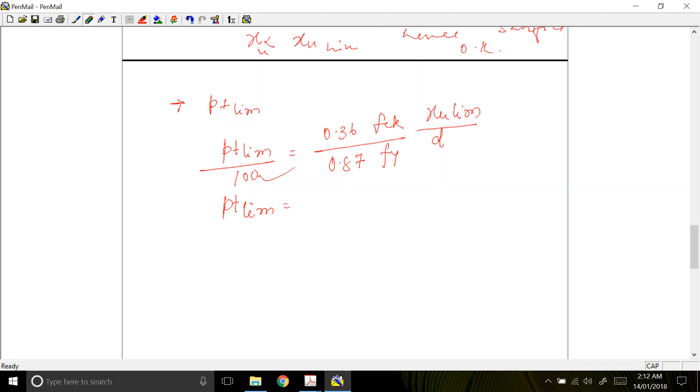Pt limiting is equal to 100 into 0.36 upon 0.87, FCK is 25, Fy is 500, XU limiting is 207, D is 450. XU limiting by D, that was correct, D is your 450.